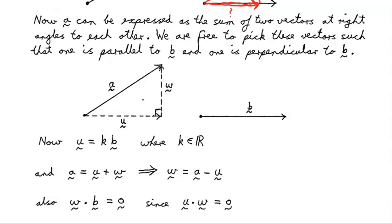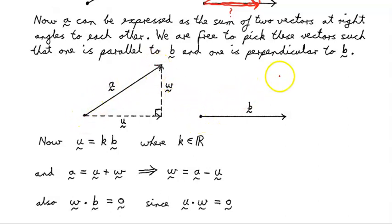A can be expressed as the sum of two vectors at right angles to each other, and we're free to pick these vectors such that one is parallel to B and one is perpendicular to B. So we have vector U, which we've chosen to be parallel to vector B, and then W perpendicular. We're going to project vector A onto vector B and see what part of A is in the direction of B and what part is perpendicular to B, because those two parts U and W will add up to A.